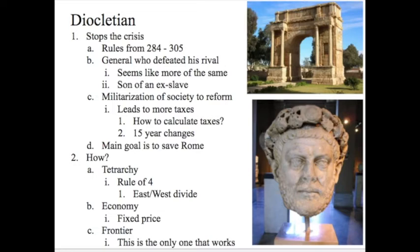In the midst of all this crisis comes Diocletian — a soldier and a general who becomes ruler from 284 to 305. Like the other men who appointed themselves emperor from the military, he defeats his rival. But Diocletian, though not a great general, was a really great leader. He was the son of an ex-slave, so he was respected as someone who had earned his place in society. He ends up militarizing Roman society.